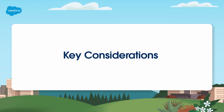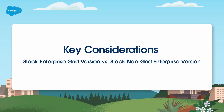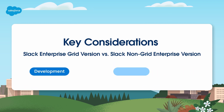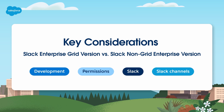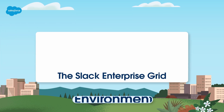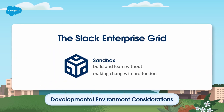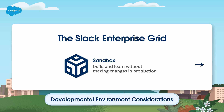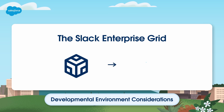It's important to consider which version of Slack is right for your org. Whether you choose Slack Enterprise Grid or Slack Non-Enterprise Grid, your choice will impact your org's testing and developing process. Consider development, permissions, Slack, and Slack channels when evaluating your options. The Slack Enterprise Grid version comes with a developmental sandbox where you can build and learn without making changes in production.